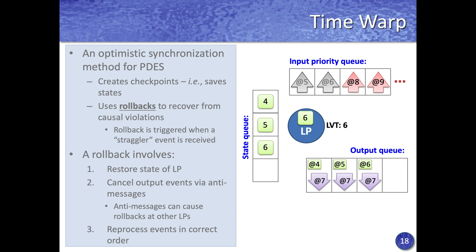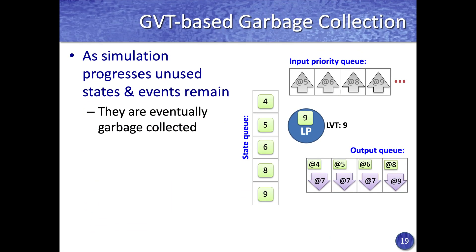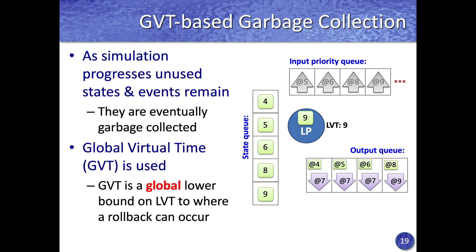This operation continues at each logical process in the parallel simulation until the simulation completes. As the simulation progresses, each logical process accumulates unused states and events in its input and output queues. These must be garbage collected to ensure the simulation doesn't run out of memory. For this, a concept called global virtual time (GVT) is used.